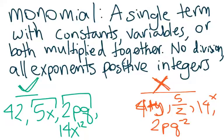14 to the x is a base that's an exponent, so that is not a monomial, and 2p times q to the negative 2 is not a monomial because q to the negative 2 involves dividing 2p by q squared.